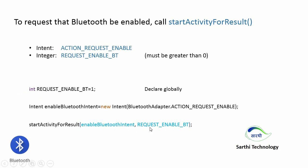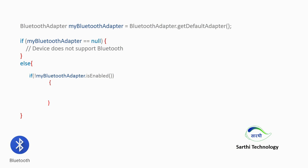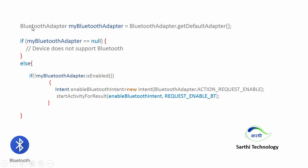Pass enableBluetoothIntent and REQUEST_ENABLE_BT as the two arguments. One important thing to remember: we will use the REQUEST_ENABLE_BT integer later in the program, so declare it globally. The intent can be declared globally or locally — no problem. So our code will look something like this: first, create the BluetoothAdapter object; second, check whether the device supports Bluetooth or not; third, check if the BluetoothAdapter is enabled or not.